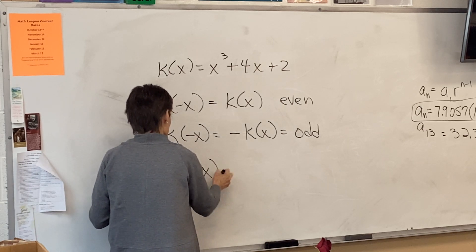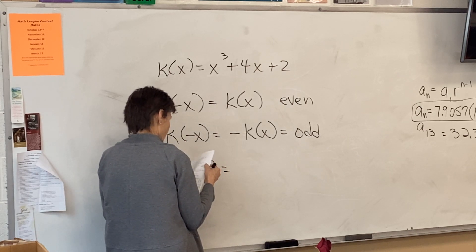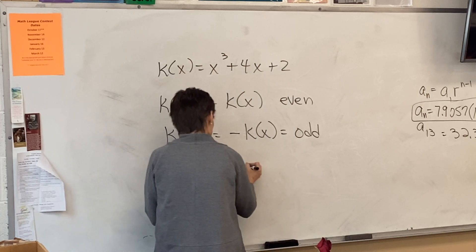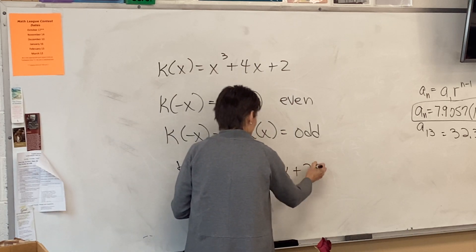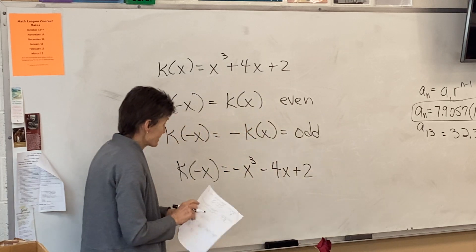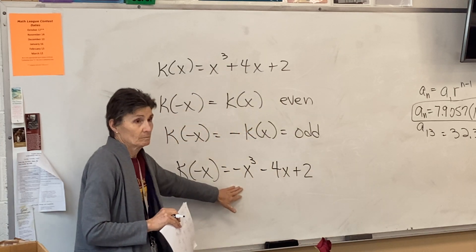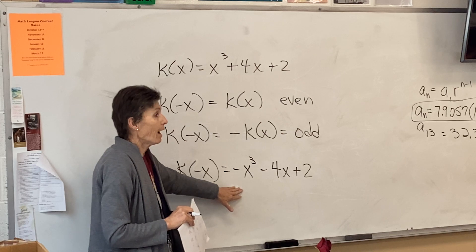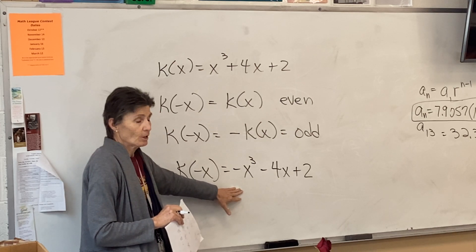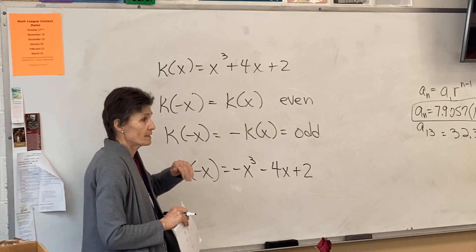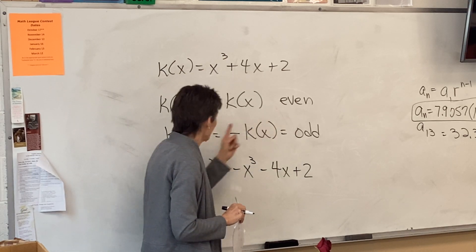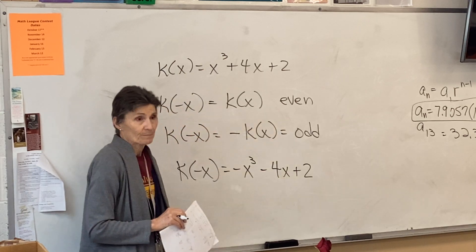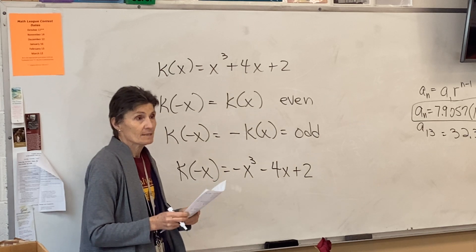So I just need to see what I get when I put negative x in. If I plug in negative x, what am I going to get? Negative x cubed minus 4x plus 2. Is that the same as the original? Nope. Is it the opposite of the original? Nope. So therefore, this function is neither. Because that didn't work, and that didn't work. So that means it's neither.